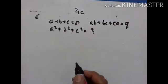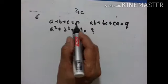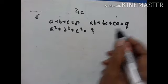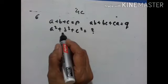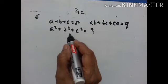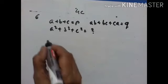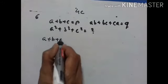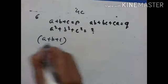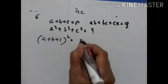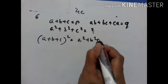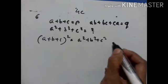Sixth problem: a plus b plus c equals p and ab plus bc plus ca equals q. We have to find the value of a square plus b square plus c square. Using (a plus b plus c)² equals a square plus b square plus c square plus 2 into ab plus bc plus ca.